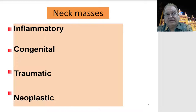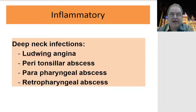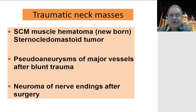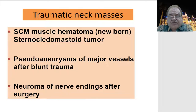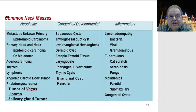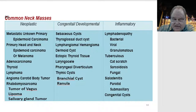Neck masses can be inflammatory, congenital, traumatic, or neoplastic. In the inflammatory variety, there are various deep neck infections like Ludwig's angina, peritonsillar abscess, parapharyngeal and retropharyngeal abscess. Traumatic neck masses include sternocleidomastoid injury at the time of delivery, pseudoaneurysm of vessels after trauma, and neuroma formation after surgery. Common neoplastic masses arise from various structures, and congenital or developmental varieties include thyroglossal cysts and dermoids. Inflammatory causes include lymphadenopathy from tuberculosis and sialadenitis.